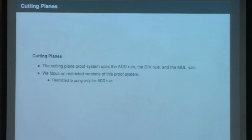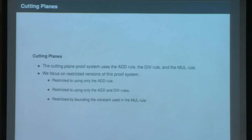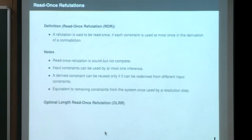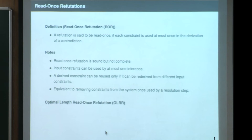Four restrictions are considered: (1) only the add rule; (2) add and div rules; (3) mul rule with a bounded constant r; (4) each constraint used at most once. A read-once refutation means each constraint is used at most once in deriving a contradiction. Input constraints can appear in at most one inference step; a derived constraint can be reused only if re-derived from new input constraints. Equivalently, once you use a pair of constraints in an inference step, they are discarded.